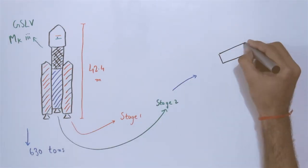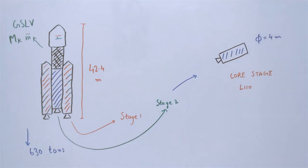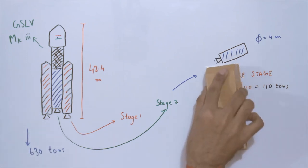Stage 2. The core stage, designated L110, is a 4-meter diameter liquid fuel stage containing 110 tons of propellant. The L110 core stage will ignite 113 seconds after the lift-off and burn for about 200 seconds.